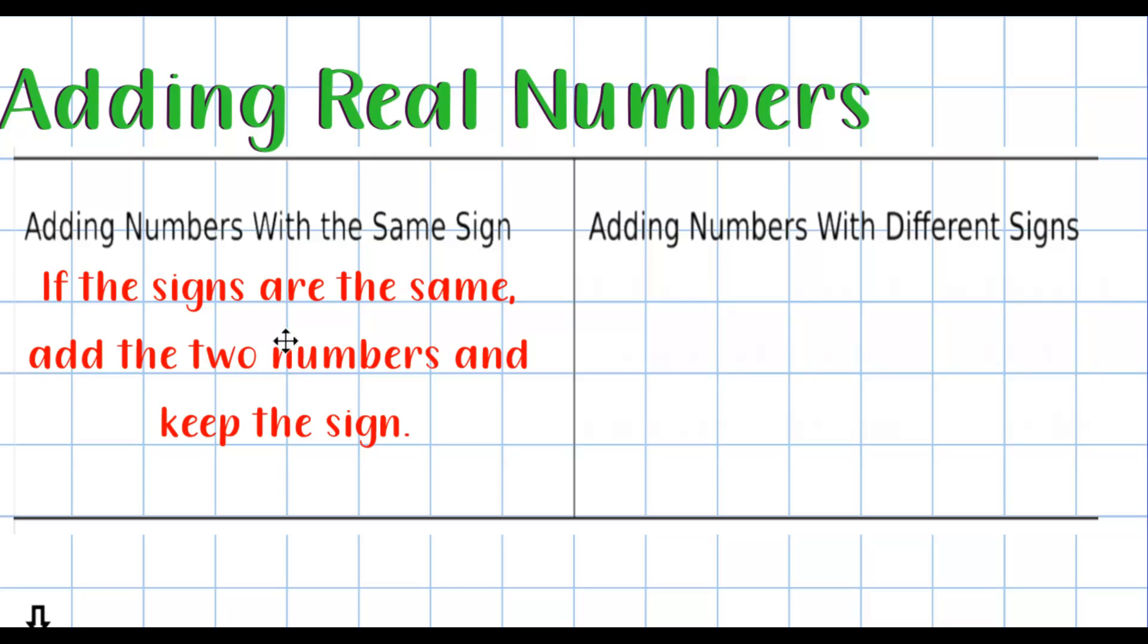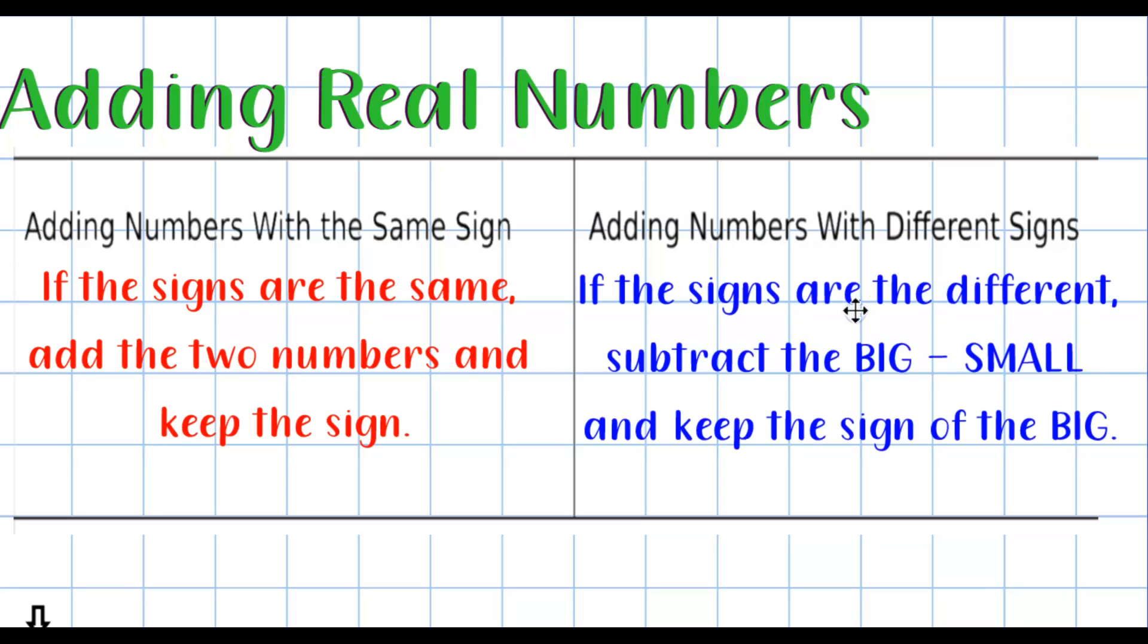If you're adding two numbers together that have different signs, this is where it can be explained in several different ways, but here's how I like to explain it. All you do is take the two numbers, the big one, and subtract the small one. When I say big and small, I mean ignore the signs, just take the numbers and subtract the big minus the small, and then keep the sign of the bigger number.